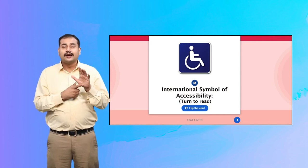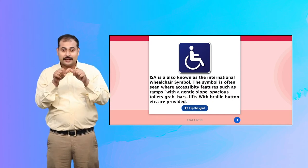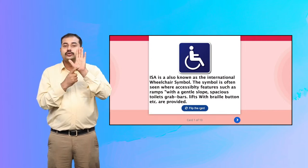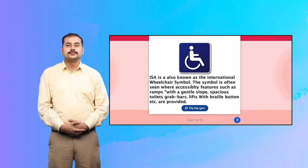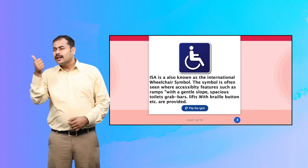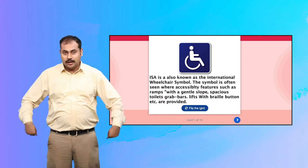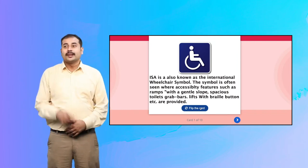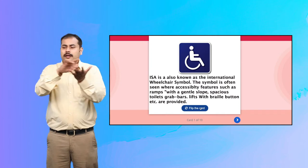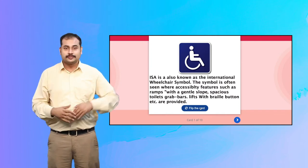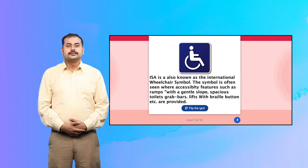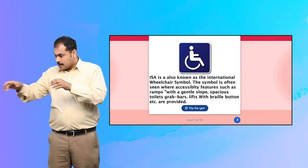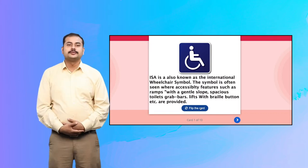The International Symbol of Access, also known as the International Wheelchair Symbol, is often seen where accessibility features such as ramps with a gentle slope, spacious toilets with grab bars, lifts with braille buttons, etc. are provided.